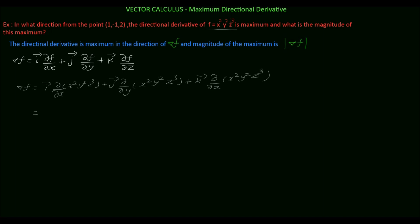First we differentiate with respect to x, so y squared z cube is a constant. The differentiation of x squared is 2x. For the j component, we differentiate with respect to y, so x squared z cube is a constant, and the differentiation of y squared is 2y. For the k component, we differentiate with respect to z, so x squared y squared is a constant, and the differentiation of z cube is 3z squared.